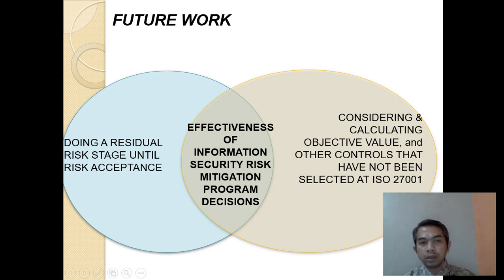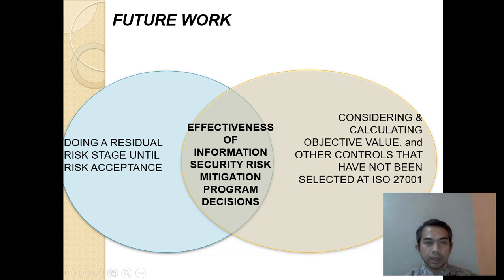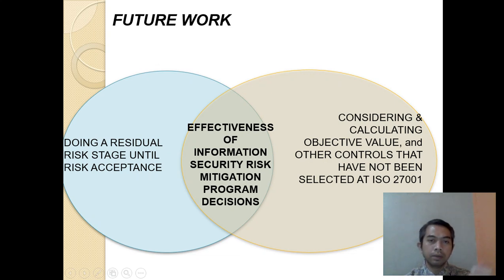For future work: on the left side, we need to complete the residual risk stage through to risk acceptance. On the right side, we need to consider and collect objective values and other controls that have not yet been selected from ISO 27001. In the middle, we can evaluate the effectiveness of the information security mitigation program once these two factors have been implemented.